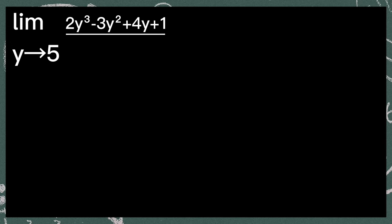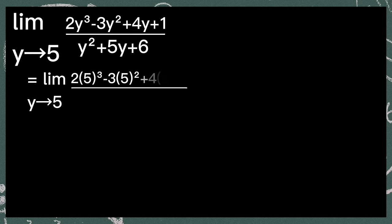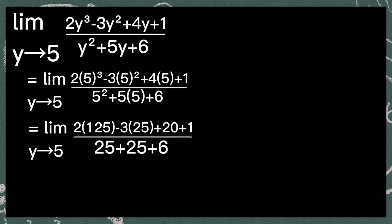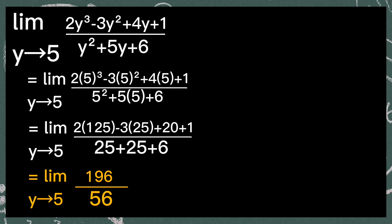Next, the limit of 2y cubed minus 3y squared plus 4y plus 1, over y squared plus 5y plus 6, as y approaches 5. Substitute 5 to all of the y's. So we have 2 times 5 cubed minus 3 times 5 squared plus 4 times 5 plus 1, over 5 squared plus 5 times 5 plus 6. 5 cubed is equal to 125 and 5 squared is equal to 25. So 2 times 125 minus 3 times 25 plus 20 plus 1 is equal to 196. 5 squared plus 5 times 5 plus 6 is equal to 56. So 196 over 56 is equal to 7/2 or 3.5.